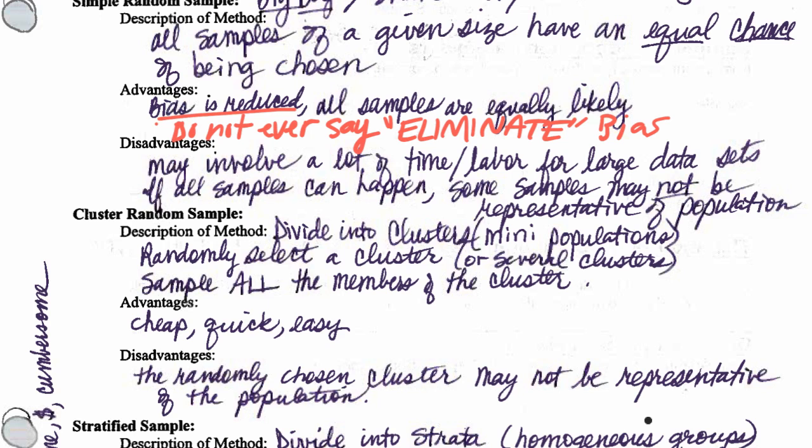But bias, in this case, is reduced. Here's the next dirty word. You cannot say, so do not say ever, do not ever say that you eliminate bias. You can't ever guarantee that you have eliminated all the bias. Just always say, bias randomization reduces bias. And part of a song that I have is, randomize to reduce bias, reduce bias.